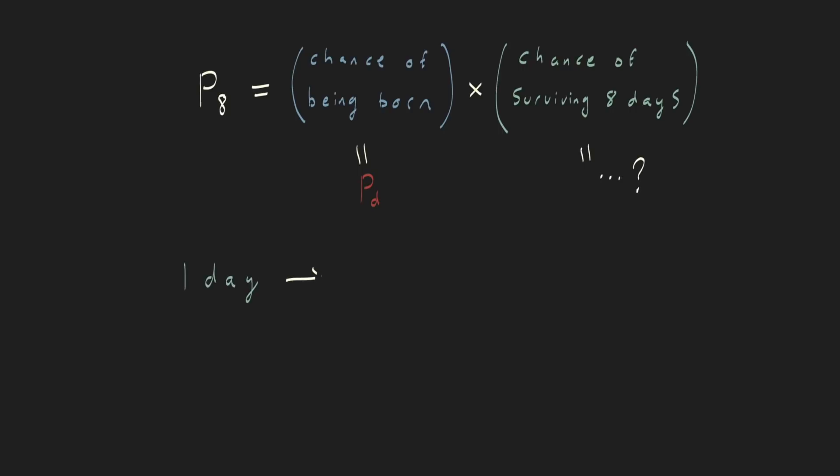Well, the chance of surviving one day is one minus the chance of dying. So if the chance of dying is one in three, the chance of surviving is two in three. The chance of surviving two days is two out of three times two out of three, or two out of three squared. And for three days, it's two out of three cubed, and so on. So the chance of surviving eight days is two out of three to the power of eight.